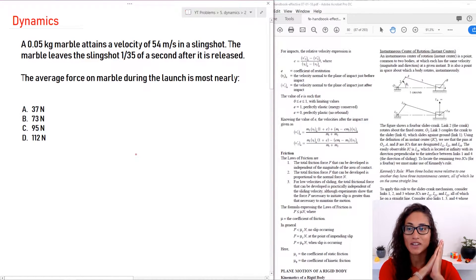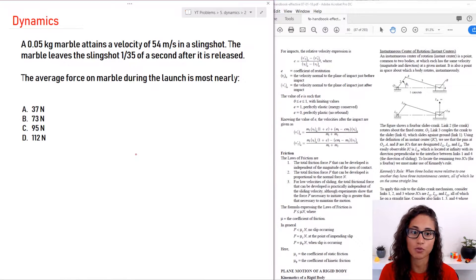Okay guys, so we have a 0.05 kg marble attains a velocity of 54 m per second. The marble leaves the slingshot 1 over 35 of a second after it is released. And we want to find the average force on a marble during the launch.